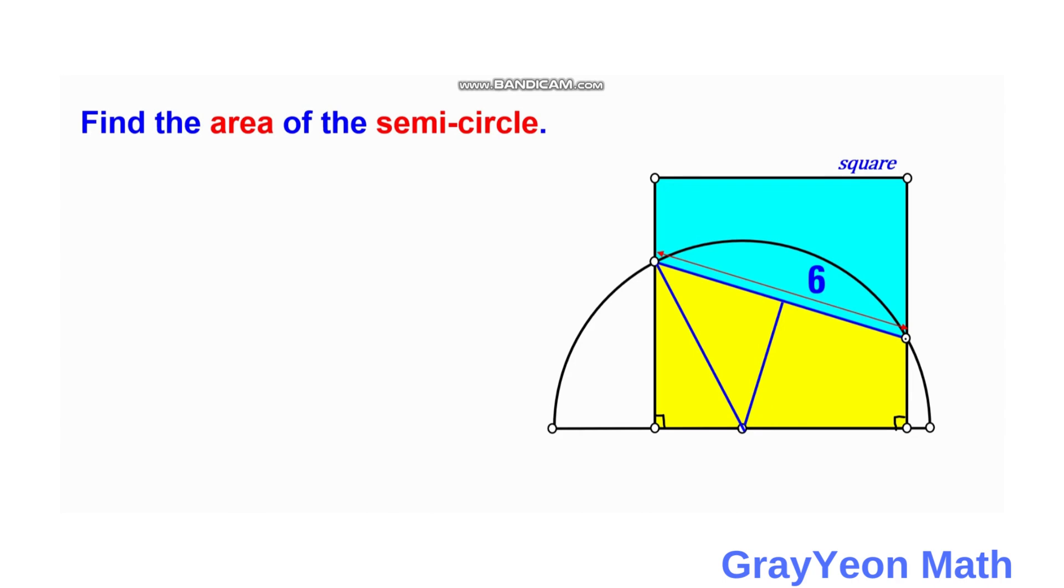So next we can actually continue this perpendicular bisector to this side of the square and that this length is also 6 because if this is actually A, let's say that this is A, and this segment is A. So this length should be congruent with this length.